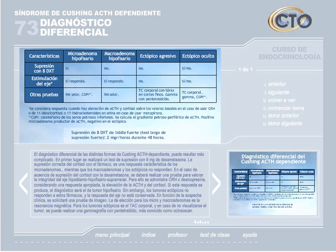En función de la sospecha clínica, se solicitará una prueba de imagen. La de elección para los micro y macroadenomas es la resonancia magnética. Para los tumores ectópicos es el TAC corporal. En caso de no visualizarse el tumor, se puede realizar una gammagrafía con pentetreótido, más conocido como octreoscan.